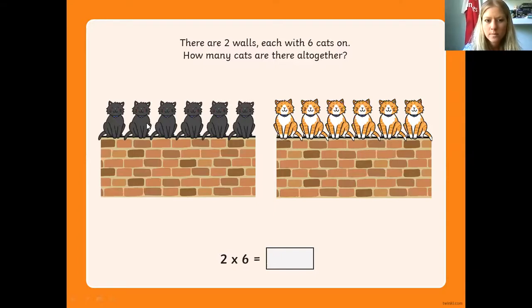So I've got 1, 2, 3, 4, 5, 6, 7, 8, 9, 10, 11, 12. If you want to do it a bit easier, we could just say 2 for two walls times 6 cats, which is 12.